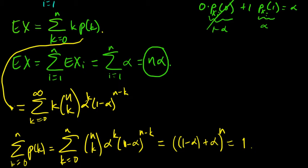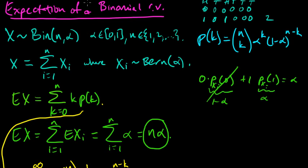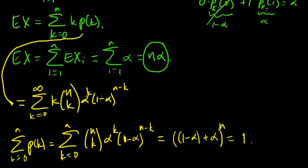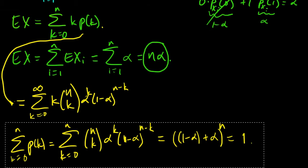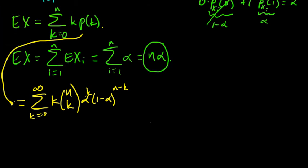I just finished making the video on the expected value of a binomial random variable and got stuck at this step here. We computed it one way, but trying to compute it directly, we got stuck here. I had a thought just after I finished the video that we might be able to approach this differently, so let's try it and see what happens. I haven't worked this out, so we're going to do it together.